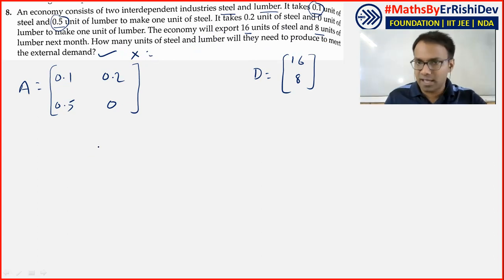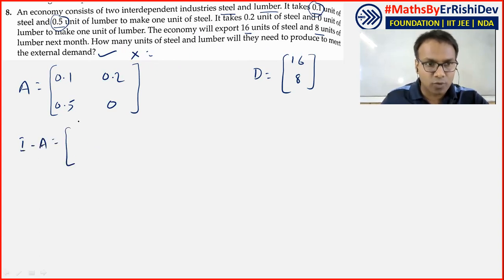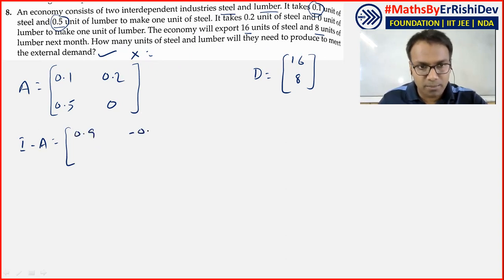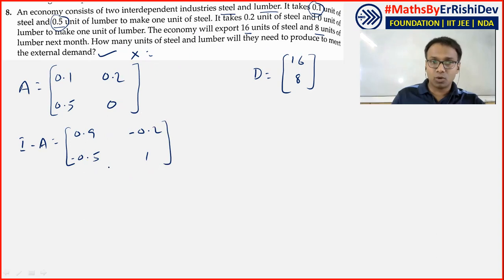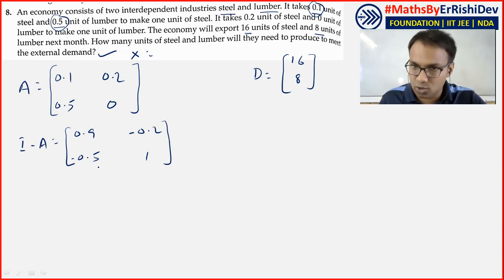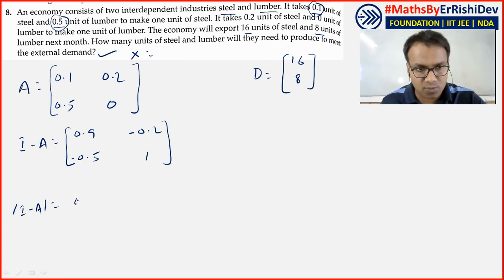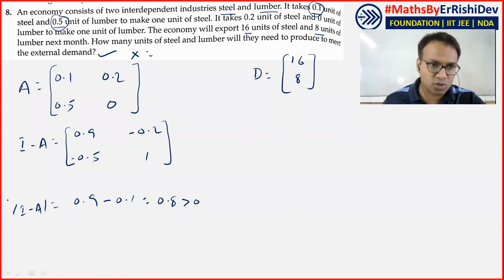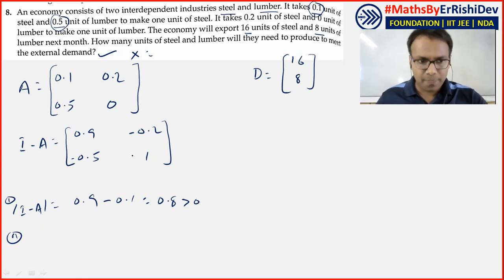Now compute I minus A: 1 minus 0.1 = 0.9; minus 0.2; minus 0.5; 1 minus 0 = 1. Check Hawkins-Simon: determinant = 0.9 × 1 minus 0.1 = 0.8, which is greater than 0 ✓. Diagonal elements 0.9 and 1 are greater than 0 ✓. Both conditions satisfied.